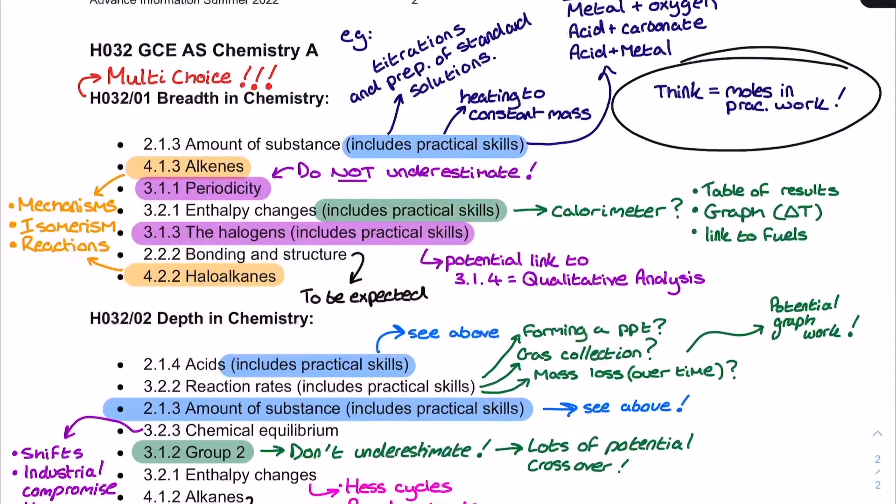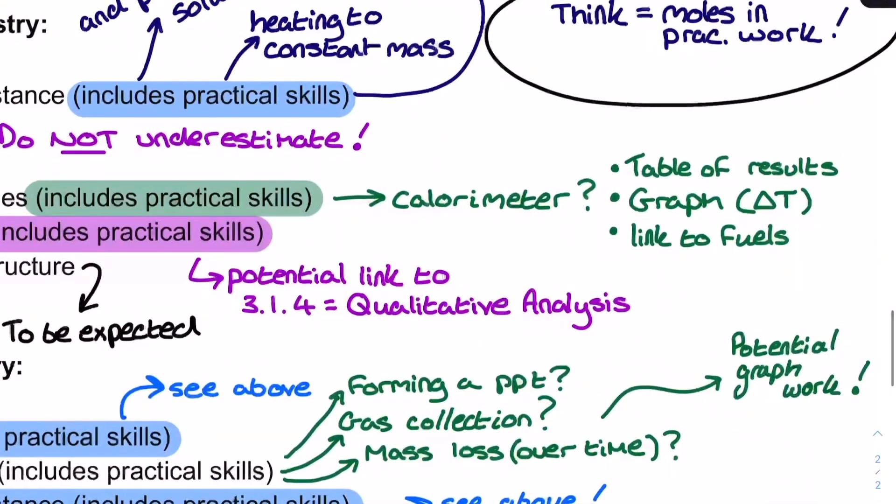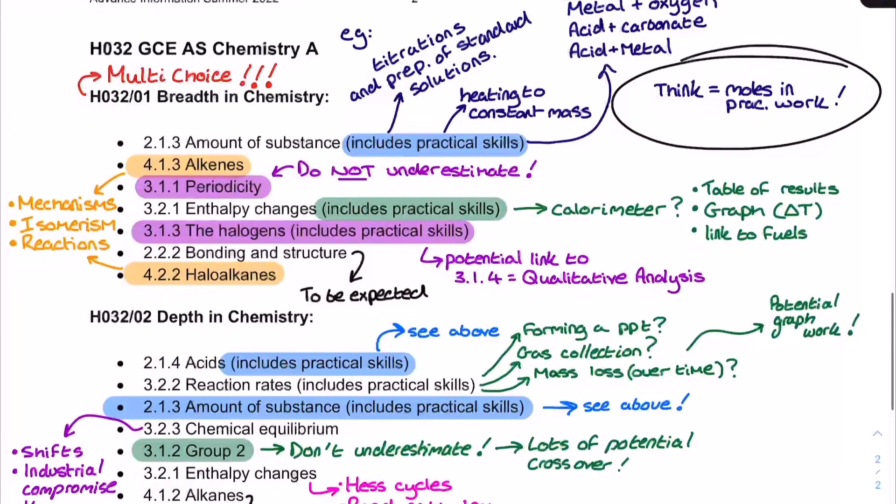What about enthalpy changes? Well, I did notice here for enthalpy changes, they've included practical skills. Now, straight away, that made me think of the calorimeter. Not saying it's guaranteed to be this context, but it did make me think of it. Now, here we could think of everything from table of results could be used, delta T from a graph could be requested, but also there's an excellent opportunity for them to try and link it to fuels using an enthalpy of combustion, for example. So, don't underestimate there the role of the calorimeter in both papers, but particularly here, because I've noticed that includes practical skills section next to the enthalpy changes subsection.